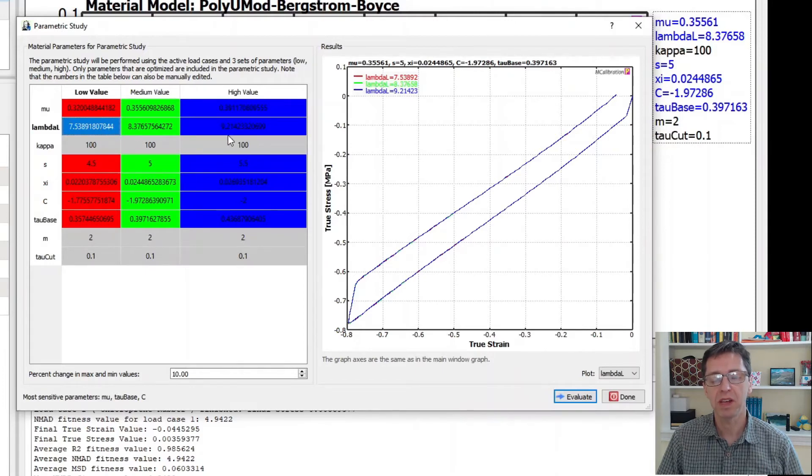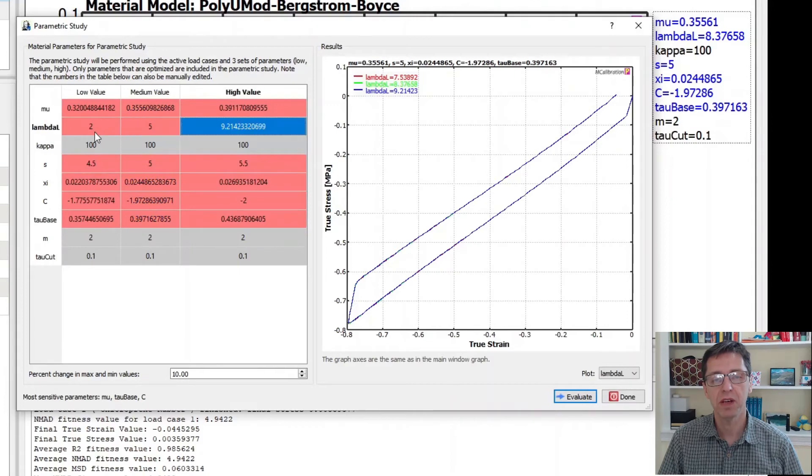7.5, 8 and 9 are very large numbers. So if you made this say 2, I can make this a value of 2. I make this 5 and I make this 8 say and I evaluate this again.